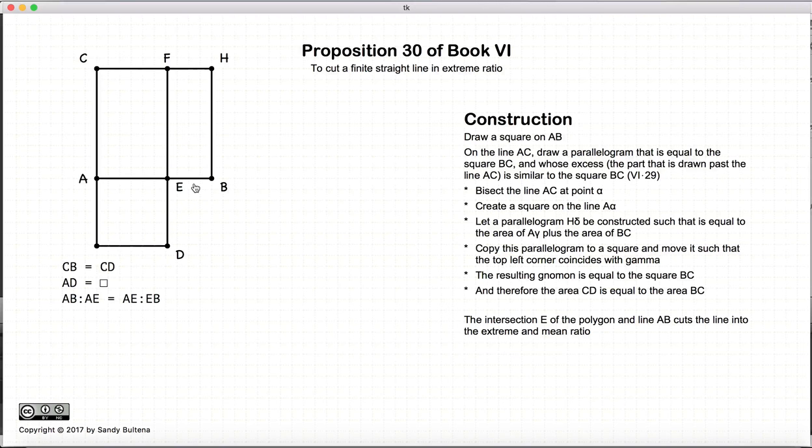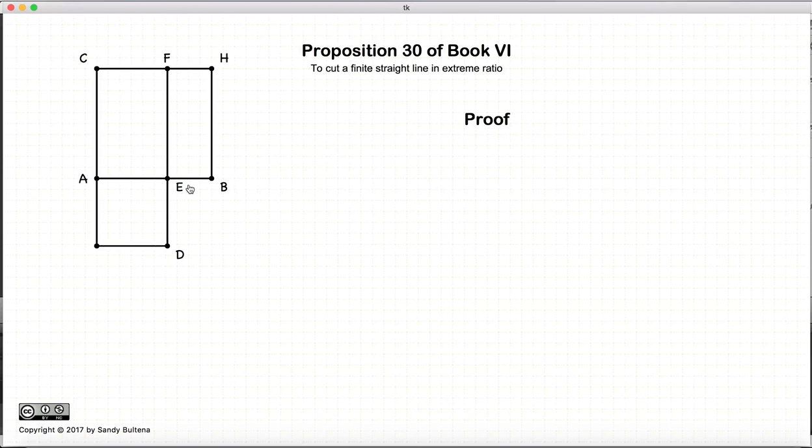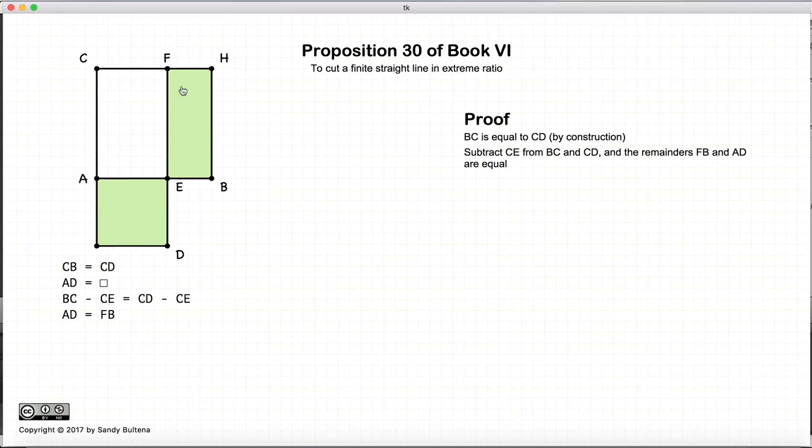So that's how we do it. Let's prove that this is actually accurate. So again we have CB is equal to CD, and AD is a square. We remove this section here from both of them, and we have that CB is equal to AD.